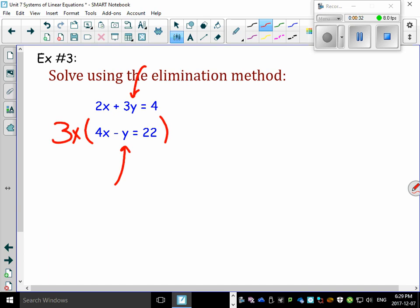Now you're probably saying, well, why 3? Well, look, I'm not touching this one. This is 2x plus 3y equals to 4. Didn't touch it. But this one, look at this. Look what happens. 3 times 4x is now 12x.